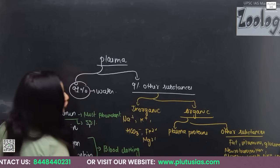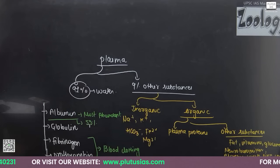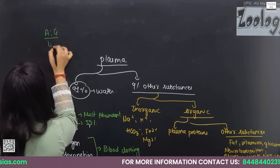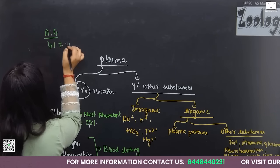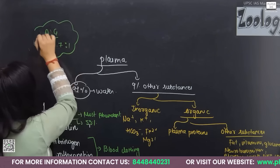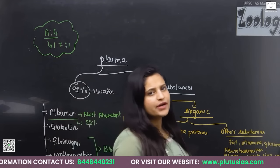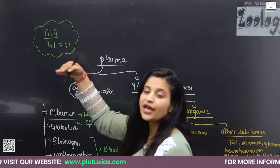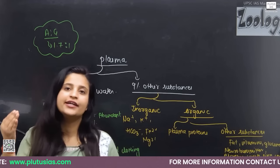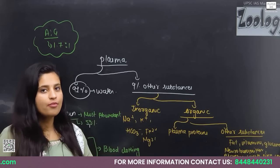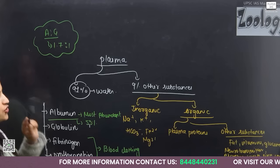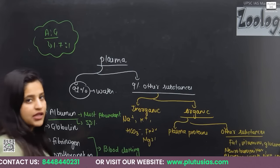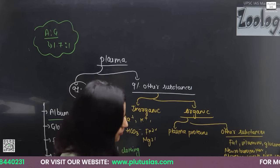The AG ratio is very important. The normal AG ratio is 1.7 to 1. In some medical conditions — if a person has any disorder — this AG ratio can increase or decrease. We will discuss plasma proteins in more detail in the next session.